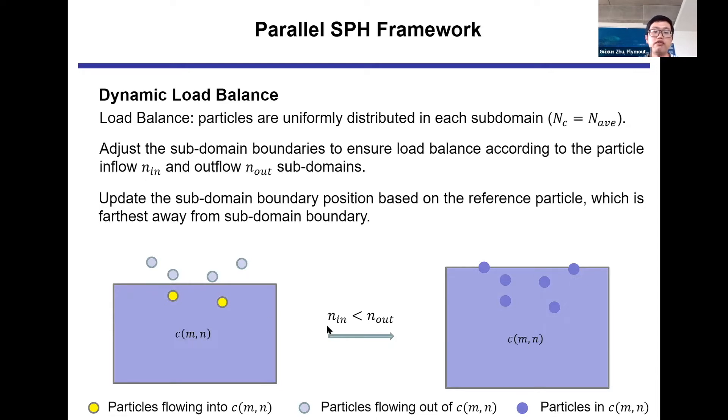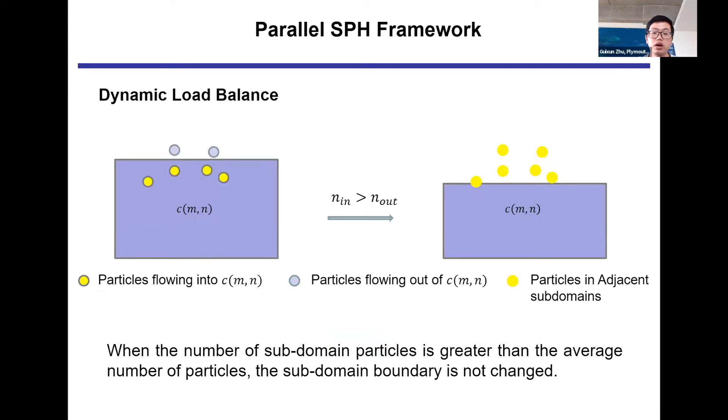When the number of outflow particles is greater than the number of inflow particles, the boundary becomes the farthest outflow particle's position. The main idea here is to find the main direction of particle motion to ensure constant particle numbers by changing the sub-boundary. When the number of sub-boundary particles is greater than the average number of particles, the sub-boundary is not changed.